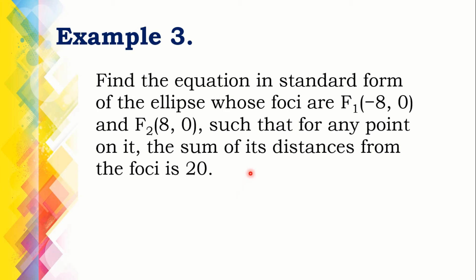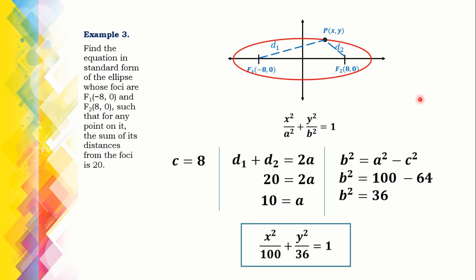Example number 3: Find the equation in standard form of the ellipse whose foci are F1 at (−8, 0) and F2 at (8, 0), such that for any point on it, the sum of its distances from the foci is 20. It is helpful to have a rough illustration to determine which standard form will be used. The foci are along the x-axis, and the midpoint between the foci is the origin (0, 0). So the value of C is 8, and the standard form is x squared over A squared plus y squared over B squared equals 1.